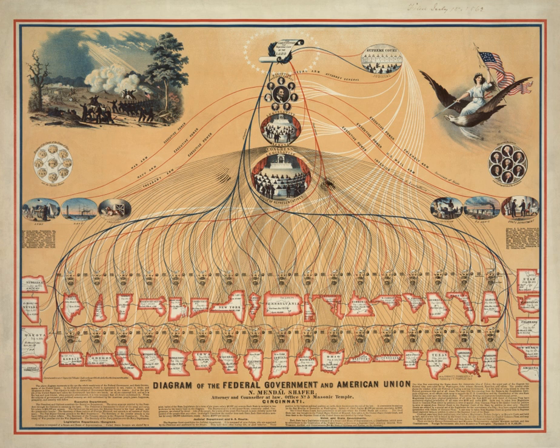The executive power in the federal government is vested in the President of the United States, although power is often delegated to the Cabinet members and other officials. The President and Vice President are elected as running mates by the Electoral College, for which each state, as well as the District of Columbia, is allocated a number of seats based on its representation in both houses of Congress. The President is limited to a maximum of two four-year terms. If the President has already served two years or more of a term to which some other person was elected, he or she may only serve one more additional four-year term.